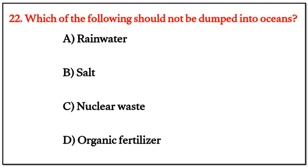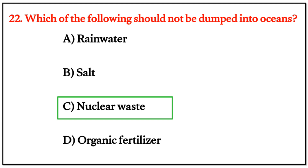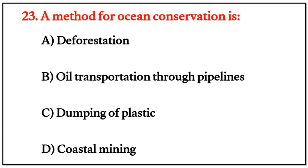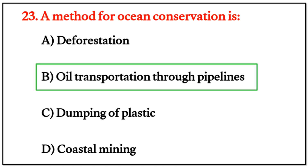MCQ Question 22: Which of the following should not be dumped into oceans? The right answer is C: nuclear waste. Question 23: A method for ocean conservation is — the right answer is B: oil transportation through pipelines.